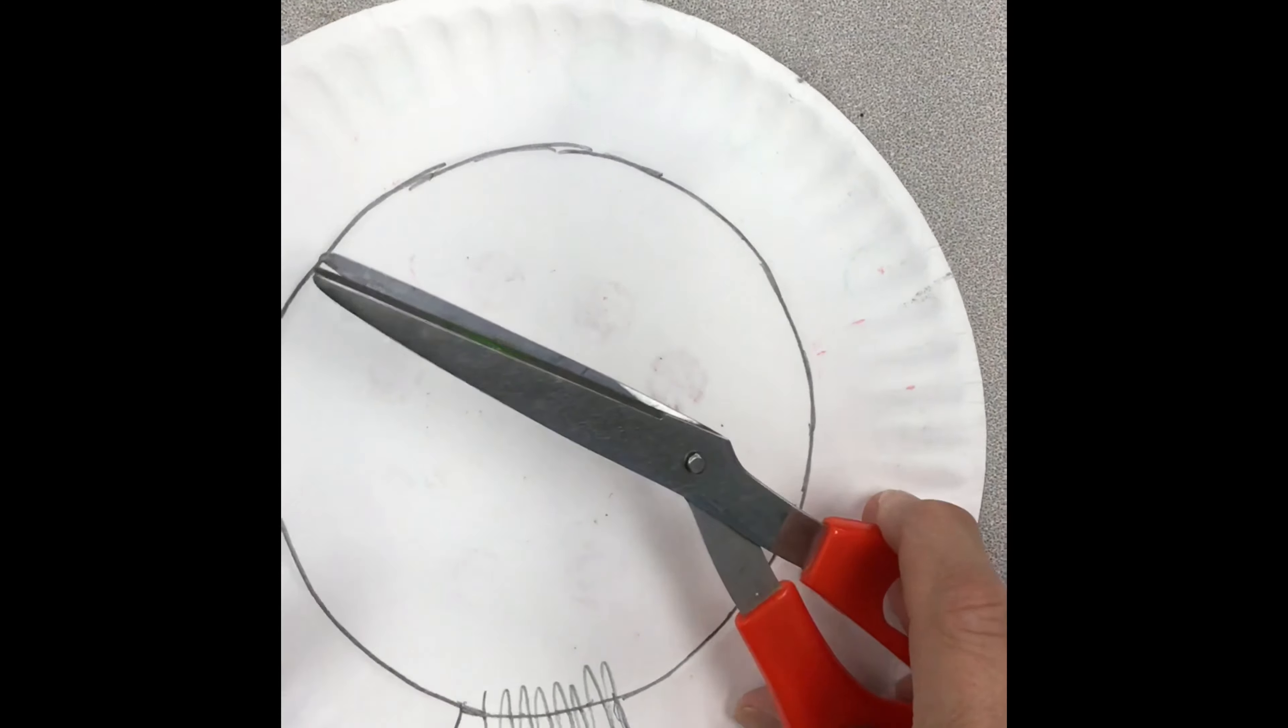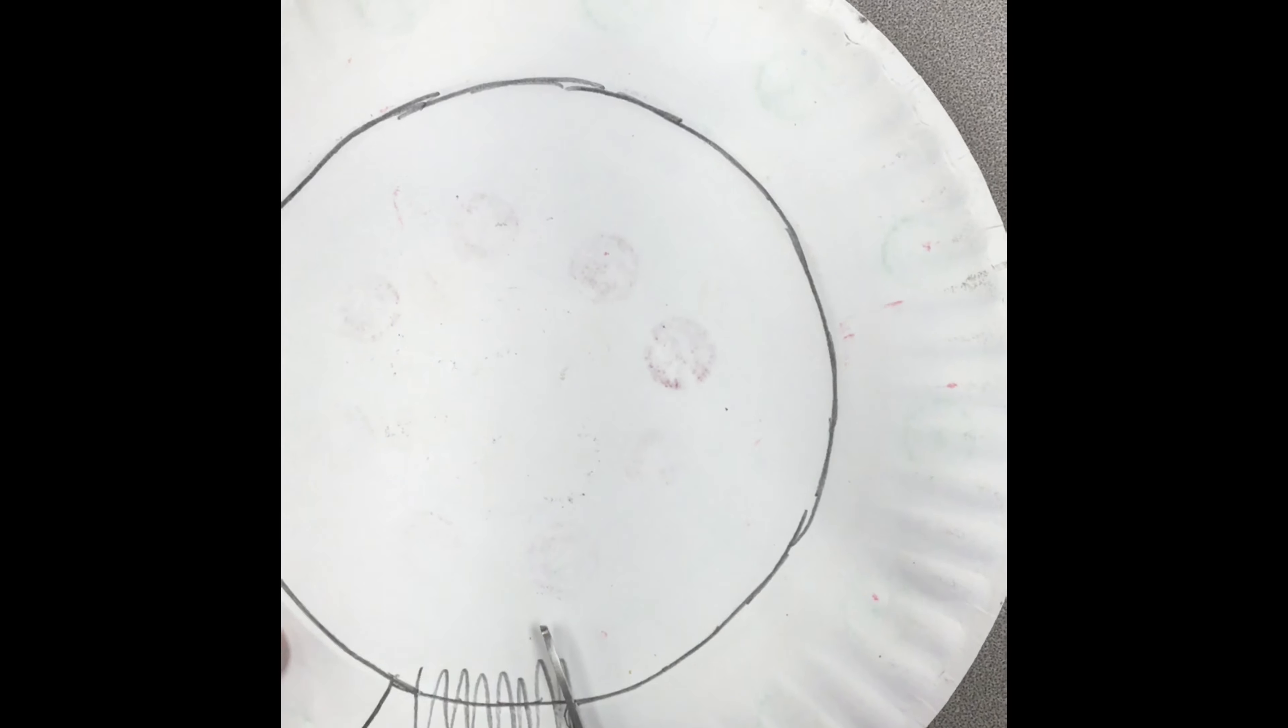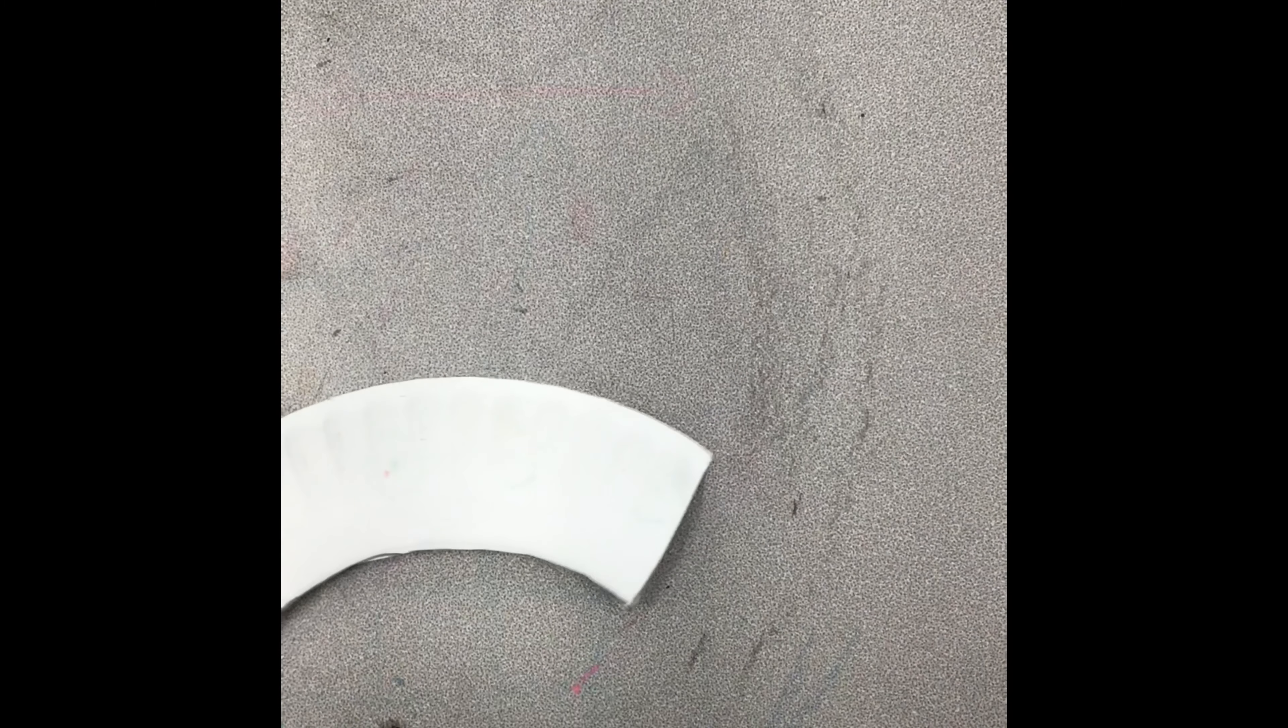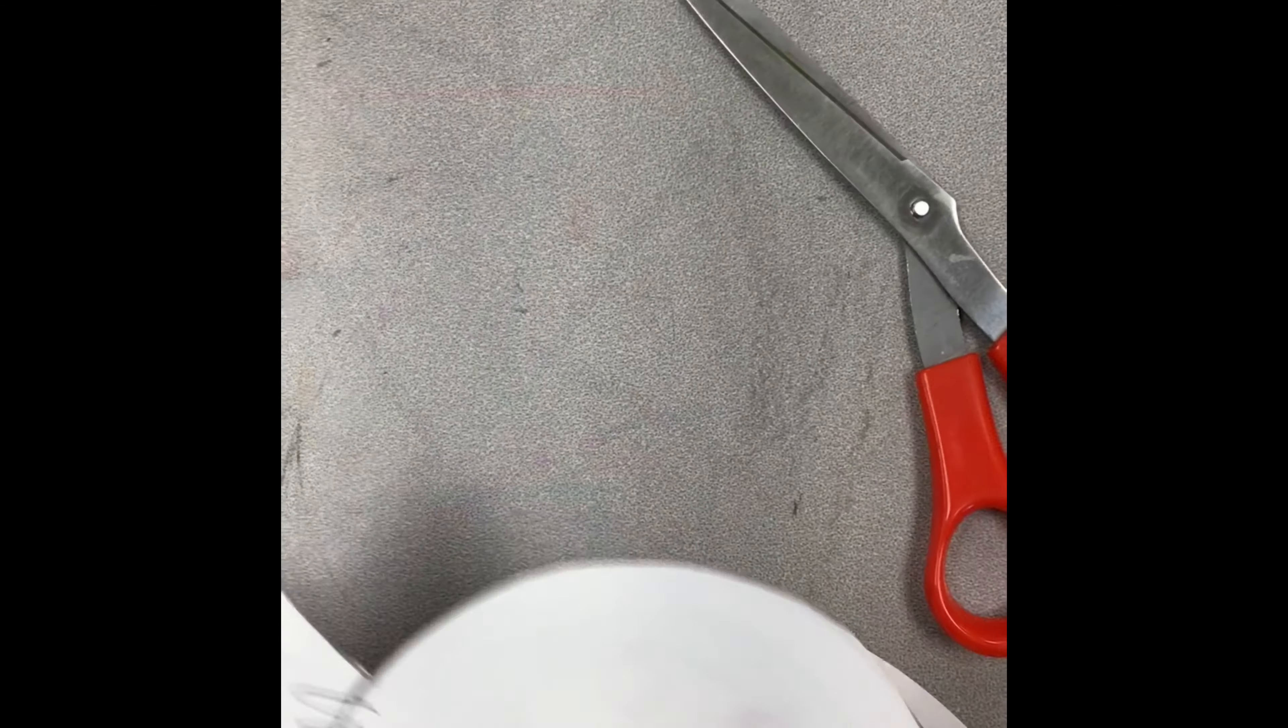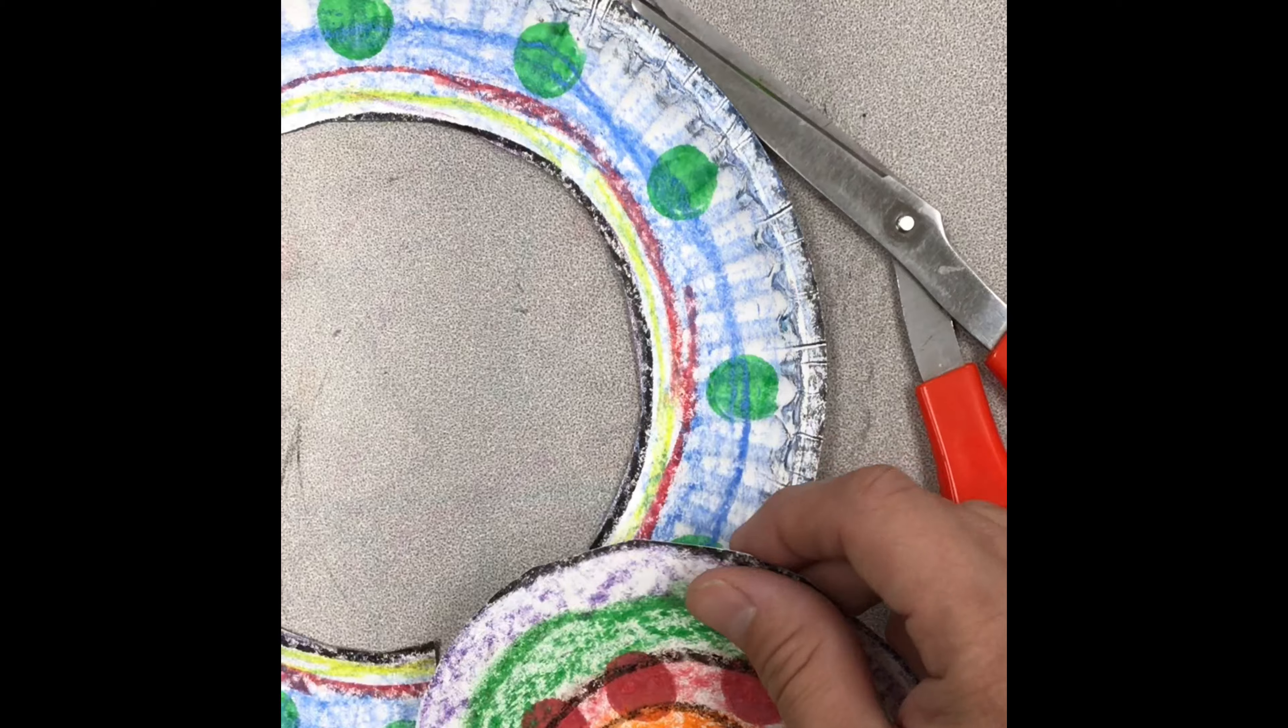So now with my scissors, I'm going to cut along the pencil line starting with one nice long cut all the way around. And I'm sorry, boys and girls, my picture is not in the camera, but I'm cutting along that pencil line. I'm sure I'm doing an excellent job. You do yours the same way. Go a little slow. Make sure you stay on your pencil line and do not cut your plate into several pieces. It should come apart in two pieces, an inside piece and the outside ring. So as you can see here, I've got two pieces now.